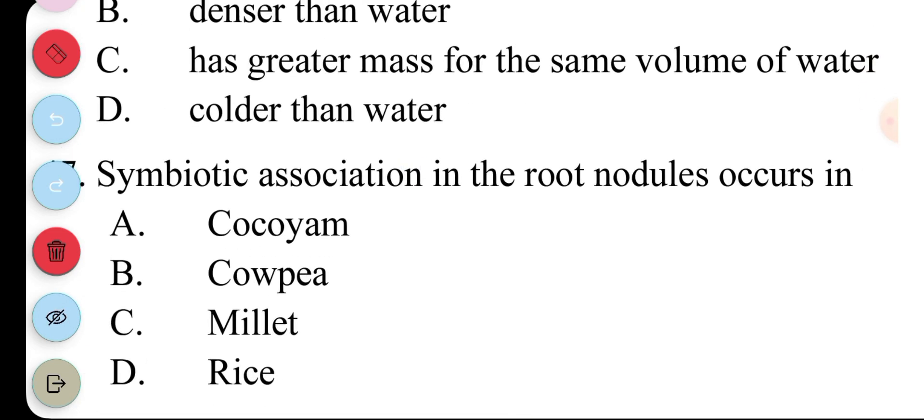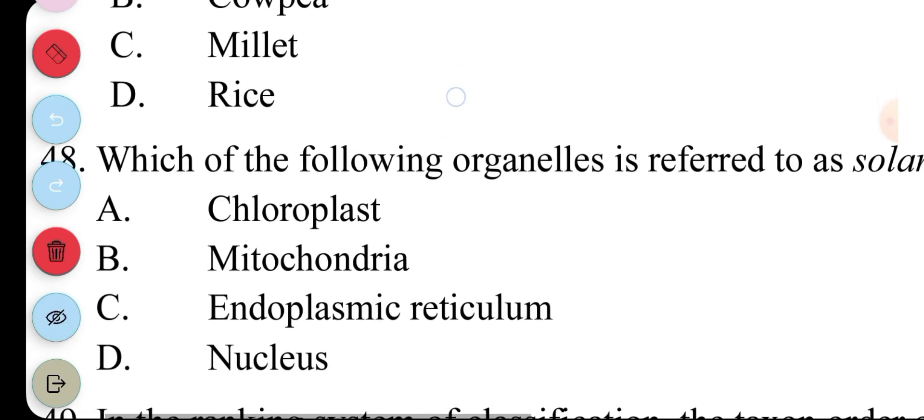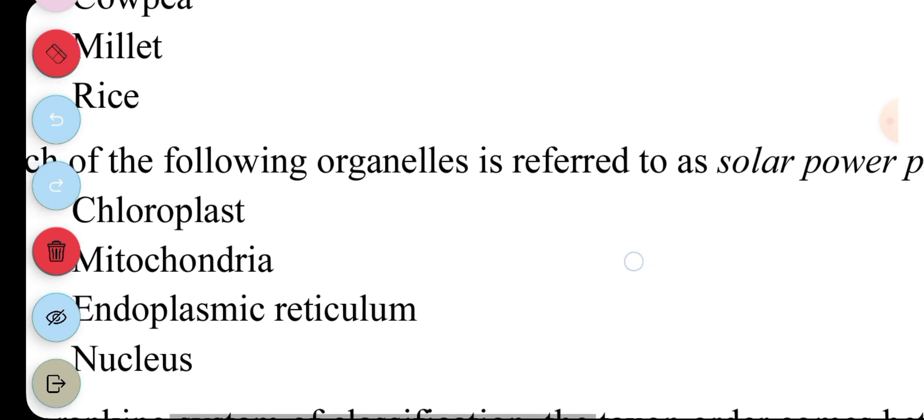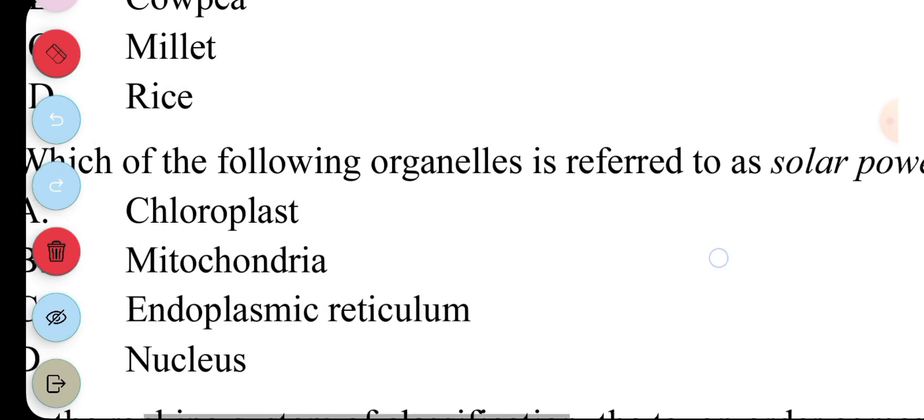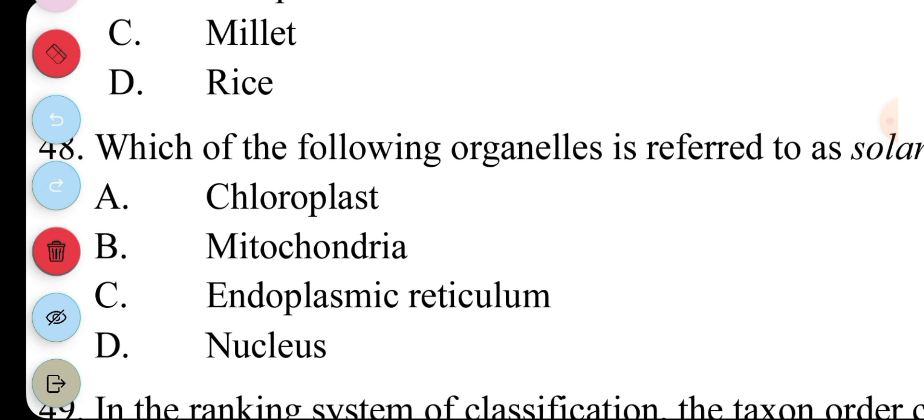47. Symbiotic association in root nodules occurs in... A. Cocoyam. B. Cowpea. C. Millet. D. Rice. Answer to this question is... B. Cowpea. 48. Which of the following organisms is referred to as... Solar power plant? A. Chloroplast. B. Mitochondrion. C. Endoplasmic reticulum. D. Nucleus. Answer to question 48 is... A. Chloroplast.